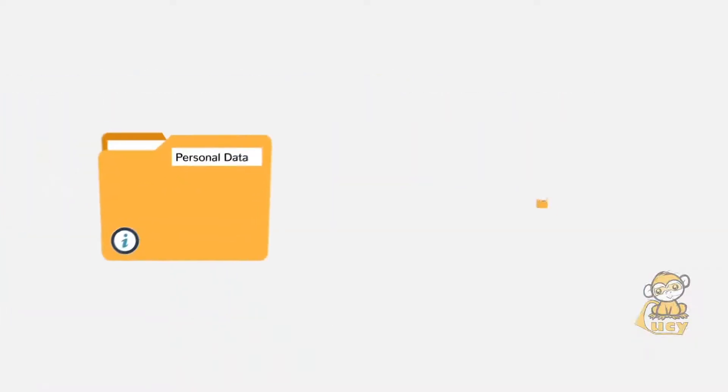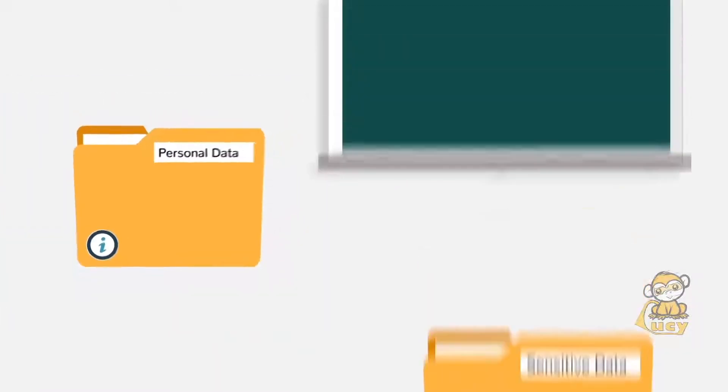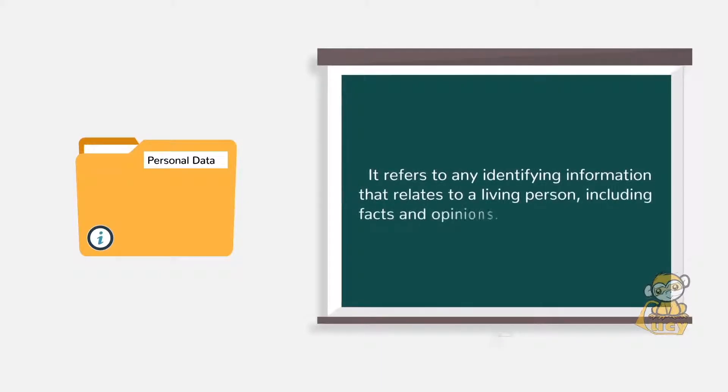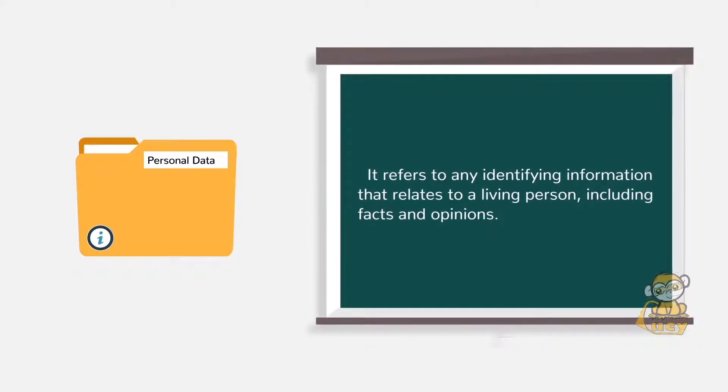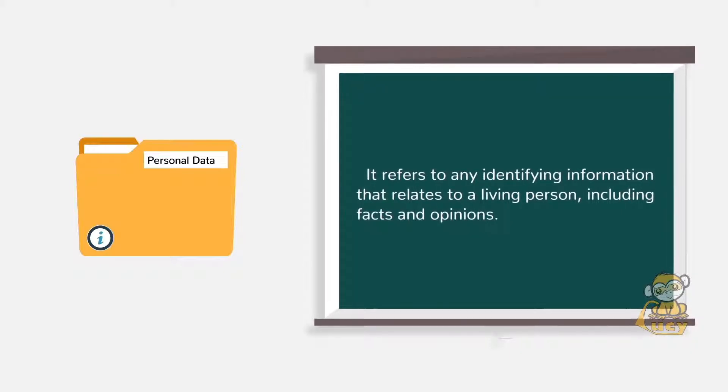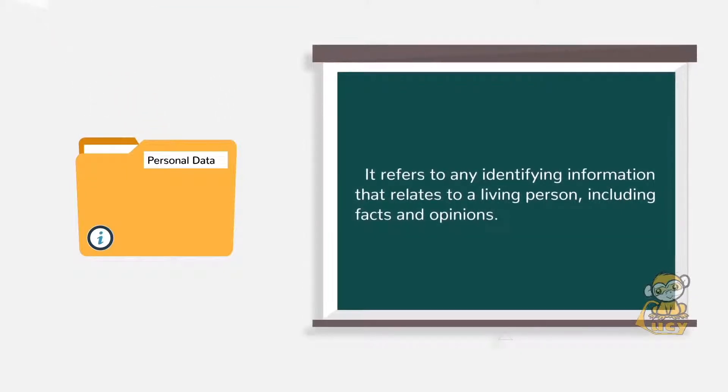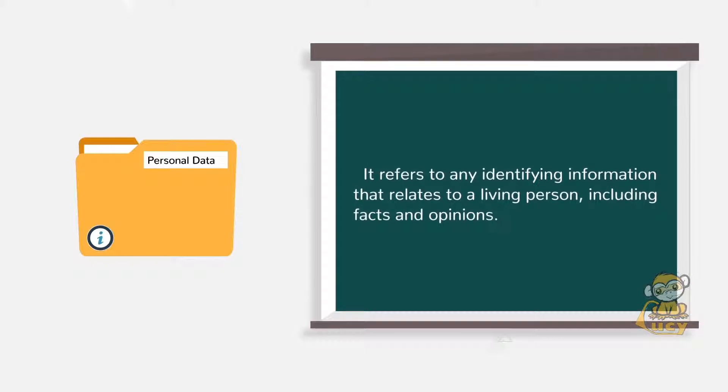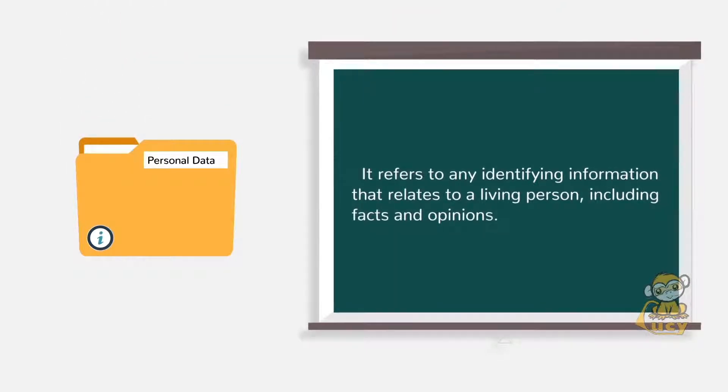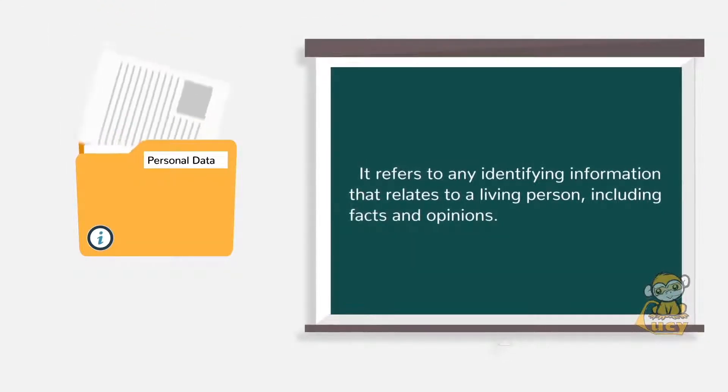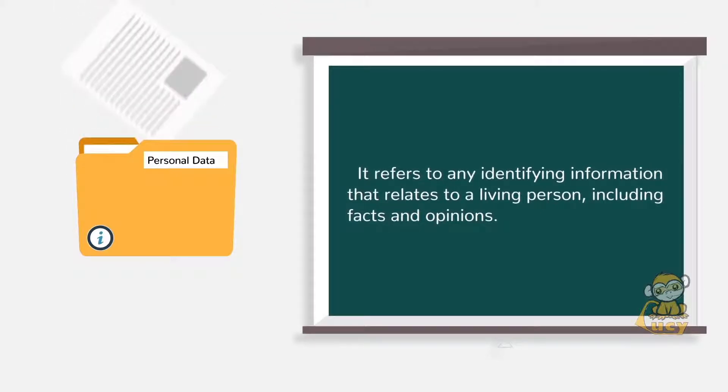So what is personal data? It refers to any identifying information that relates to a living person, including facts and opinions. Examples include names, addresses, and telephone numbers, physical descriptions and CCTV footage, as well as unique reference numbers, personal salary information, economic and cultural information.